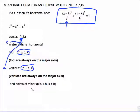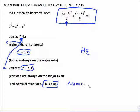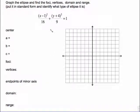Now the opposite: the endpoints of the minor axis have an entirely different format. Because it is a horizontal ellipse, the minor axis will be the vertical axis. That's why we add and subtract b — the vertical component — to k, while h, the horizontal part of the center, stays the same. Let's look at an example with numbers.